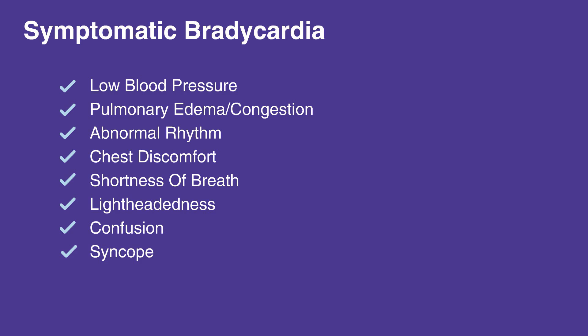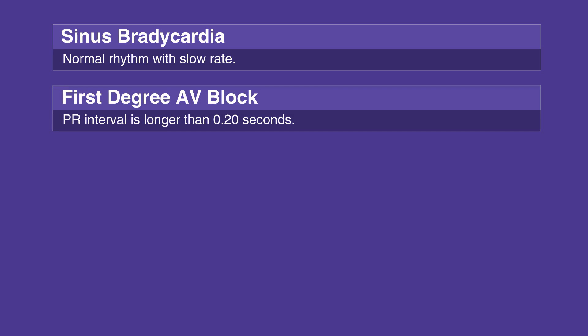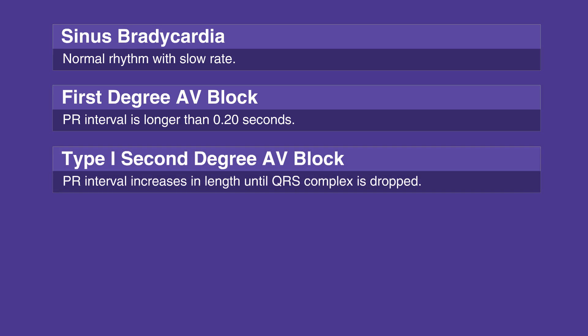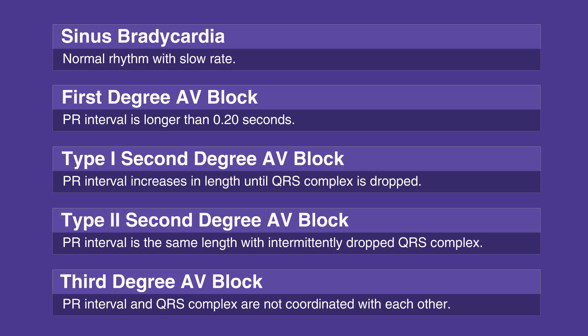The following are the kinds of bradycardia and what happens during specific bradycardiac events. Sinus bradycardia: normal rhythm with a slow rate. First degree AV block: PR interval is longer than 0.20 seconds. Type 1 second degree AV block, or Mobitz 1: PR interval increases in length until QRS complex is dropped. Type 2 second degree AV block, or Mobitz 2: PR interval is the same length with intermittently dropped QRS complex. Third degree AV block, or complete: PR interval and QRS complex are not coordinated with each other.